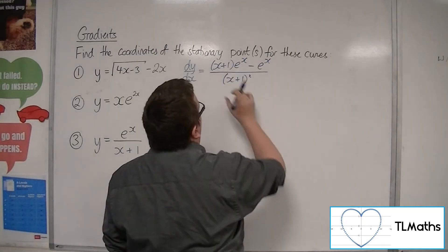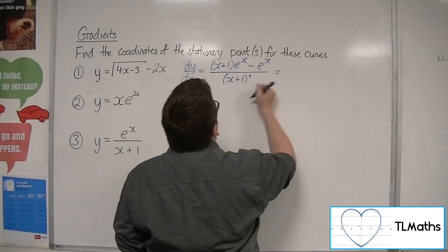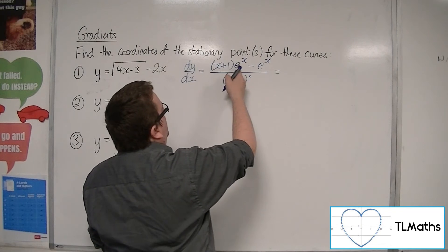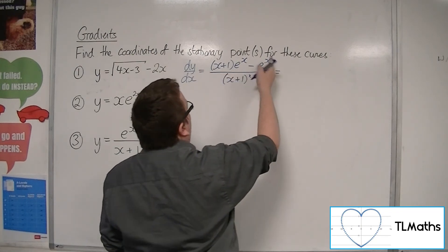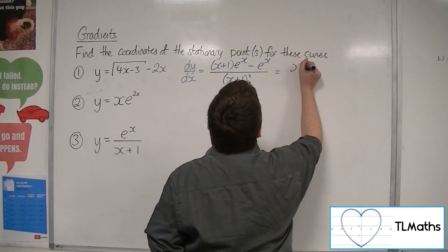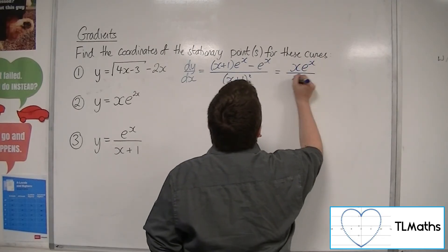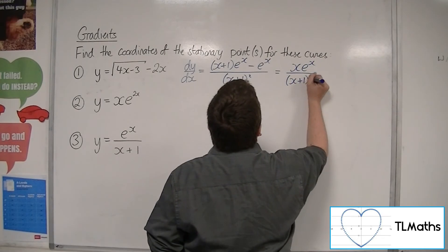So if I simplify the numerator, I get (x + 1)e^x + e^x - e^x. So the e^x's cancel. So I just get left with xe^x over (x + 1)^2.